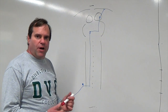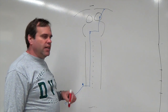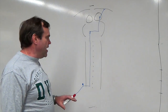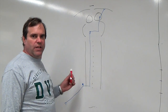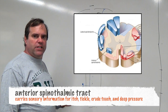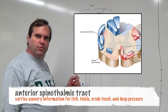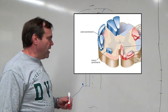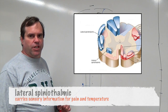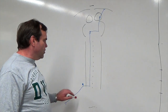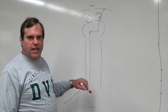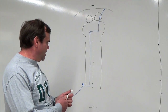The second sensory pathway we're going to look at is the anterior and lateral spinothalamic tract. Now these are actually two different tracts — we have the anterior spinothalamic, which carries pain and temperature. I'm only going to draw in one pathway because they follow the same route and the same neurons cross over in the same places.